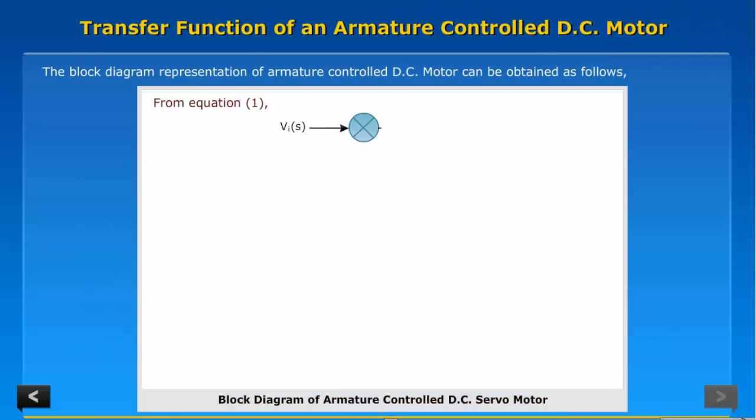The block diagram representation of armature controlled DC motor can be obtained as follows.